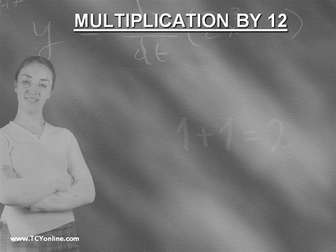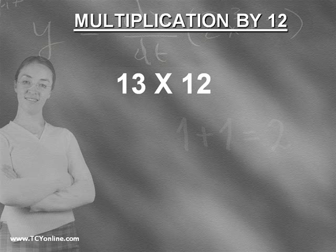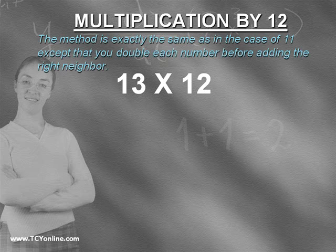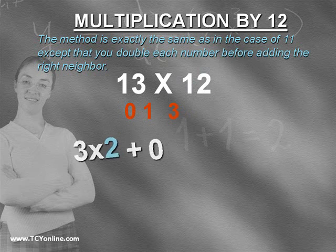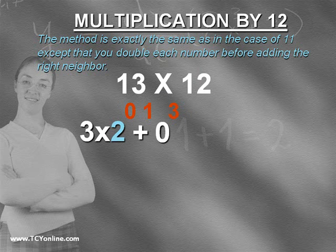Similarly, let's look at how to multiply 13 by 12 in few seconds. Now over here the method is exactly the same as in the case of 11, except that you double each number before adding the right neighbor. First of all prefix 0 to it, we get 0, 1, 3. Now double each digit and add the right neighbor of each digit to it.